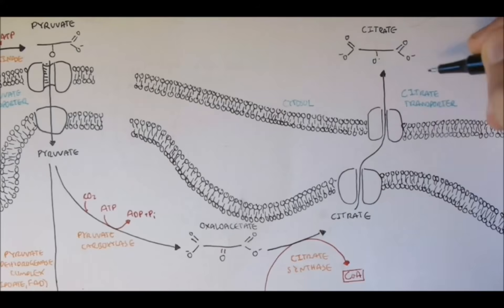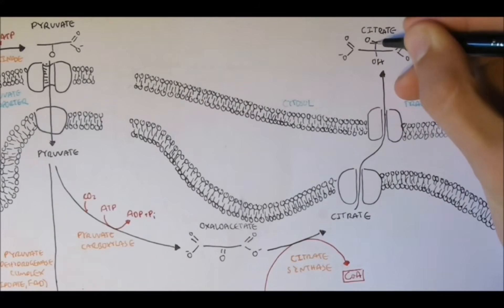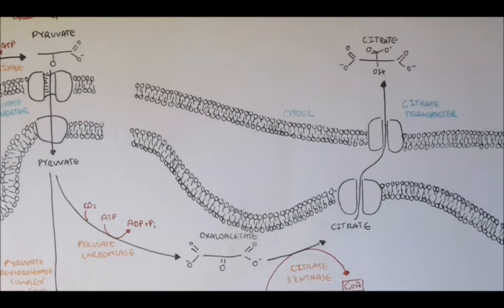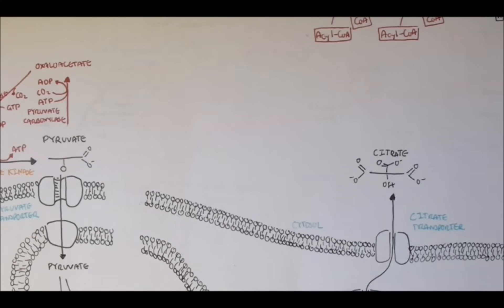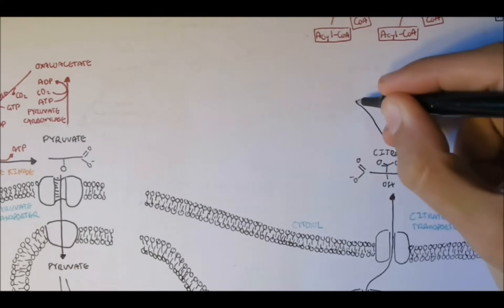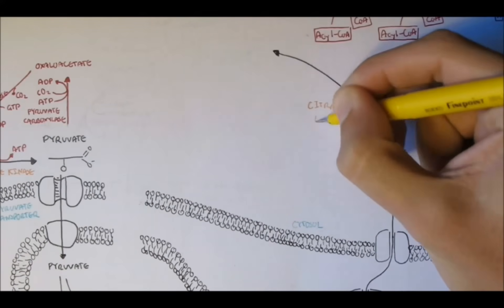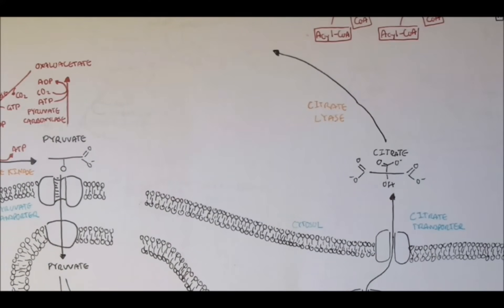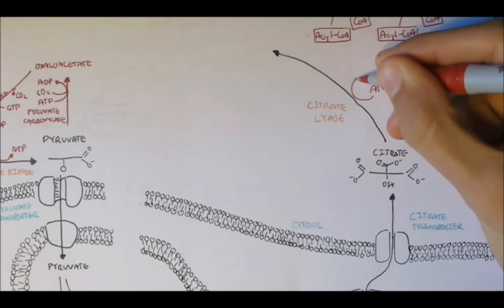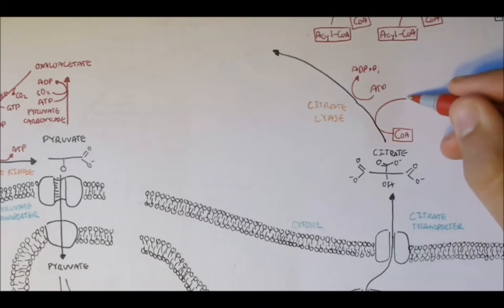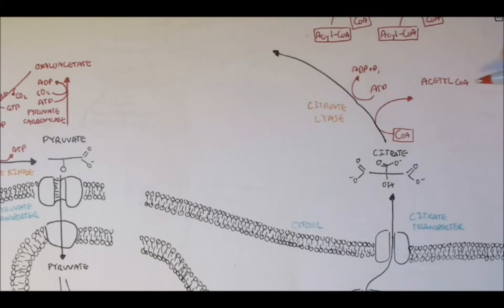Now, citrate then, not surprisingly, it can transfer back to oxaloacetate. So, from oxaloacetate in the mitochondria to citrate. And once citrate is out into the cytosol, citrate converts back to oxaloacetate. And this is done by the enzyme citrate lyase. And which means that a CoA group in the cytosol can then retrieve the acetyl group, forming acetyl-CoA again.